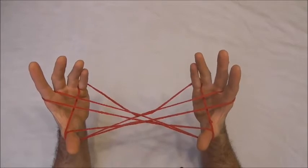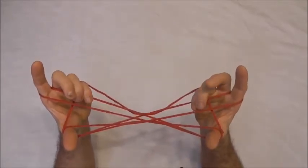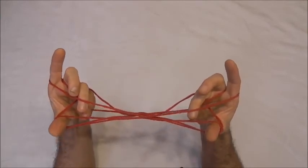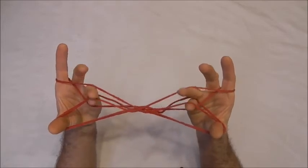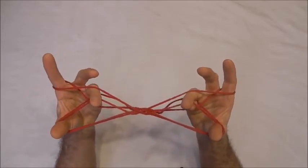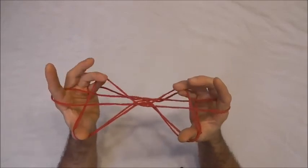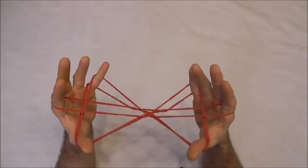Then I want to take my little finger and ring finger into the pointer finger loop from above, underneath the near pointer finger string, and then pinch that far thumb string in between my little finger and ring finger. And then I want to pull it back through the pointer finger loop and extend my little fingers.